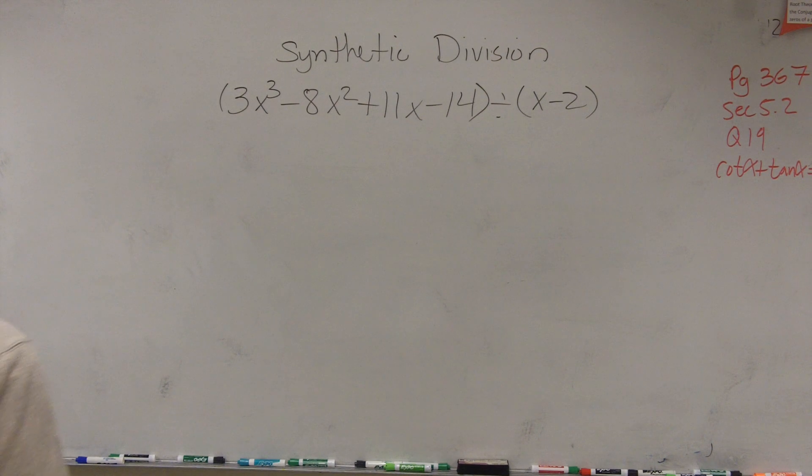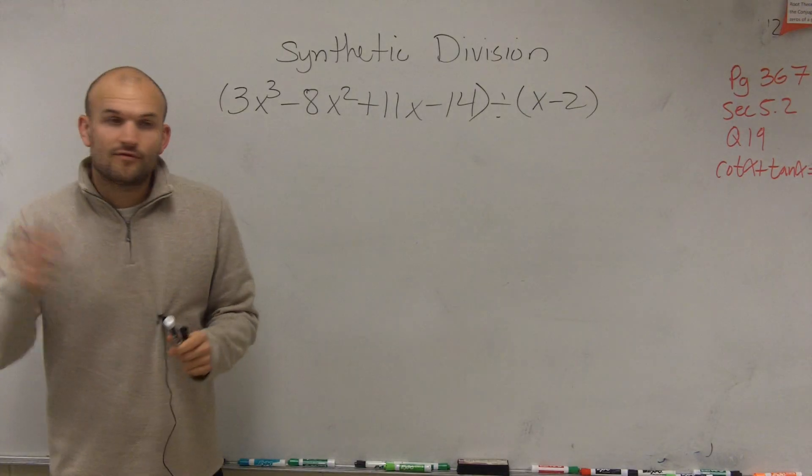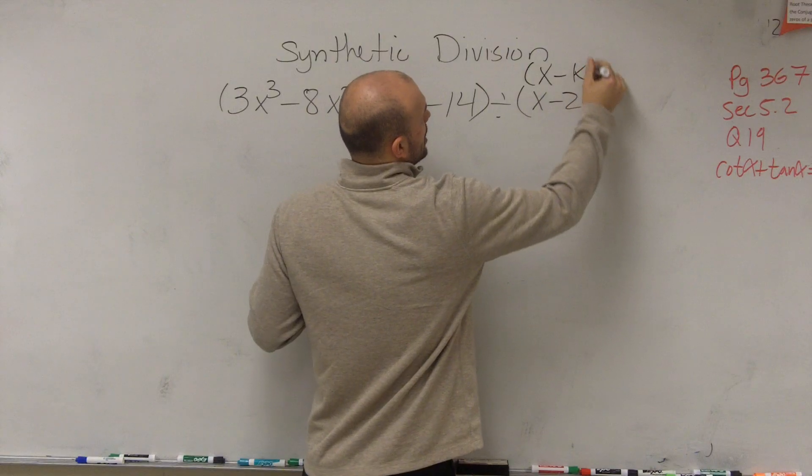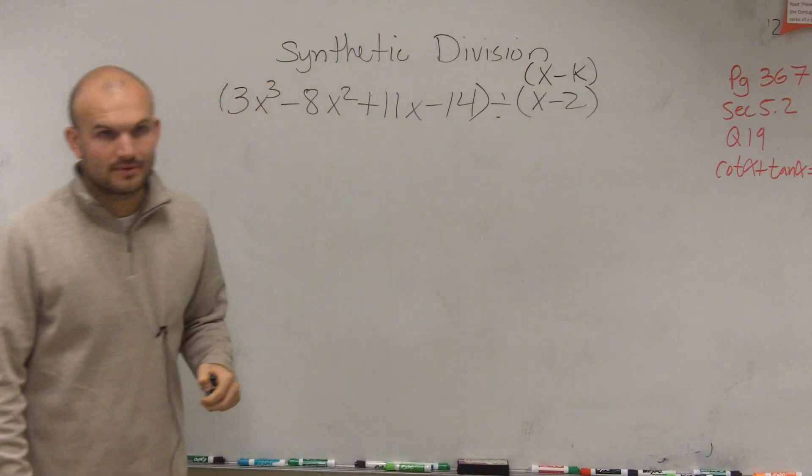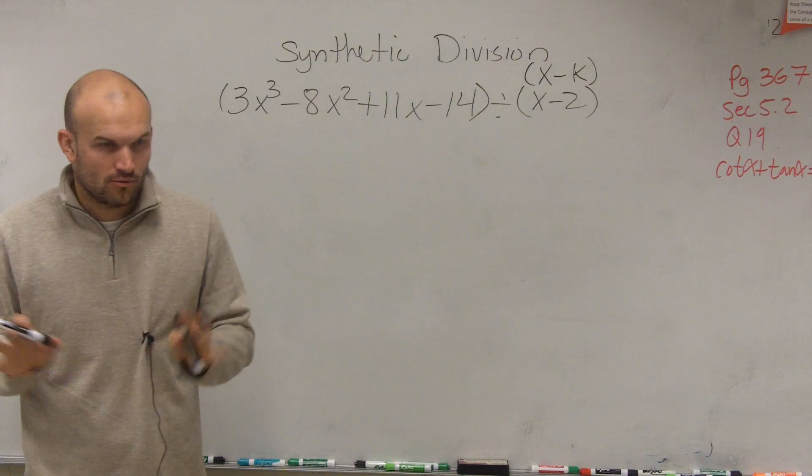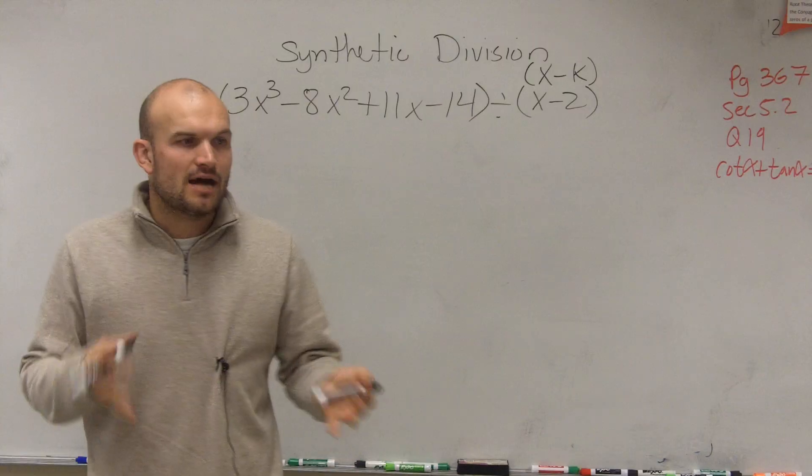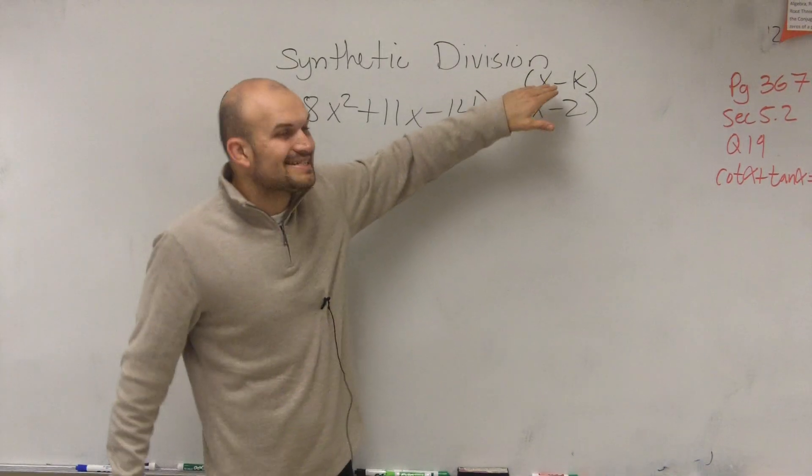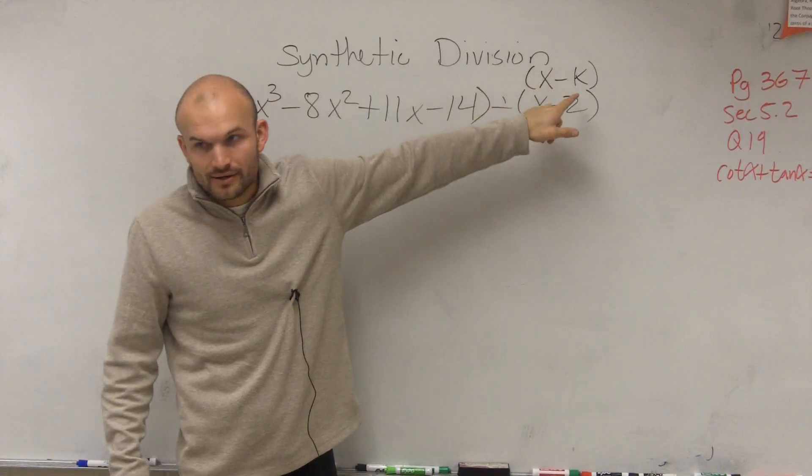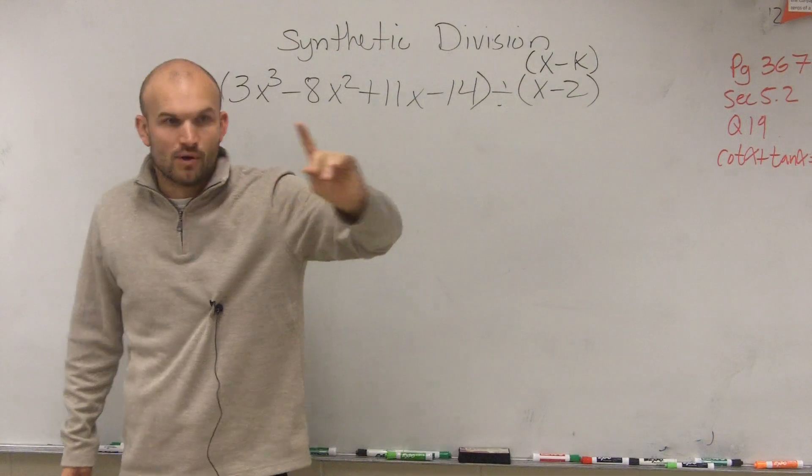When completing synthetic division, there's a couple important points we need to make sure we have. First of all, our divisor has to be in the form of x minus k - a linear factor. We're going to learn more about synthetic division later. For right now, the only thing I want you guys to understand is it has to be in the form of x minus k. You cannot have x squared at all. It has to be linear, meaning the variable has a degree of 1.